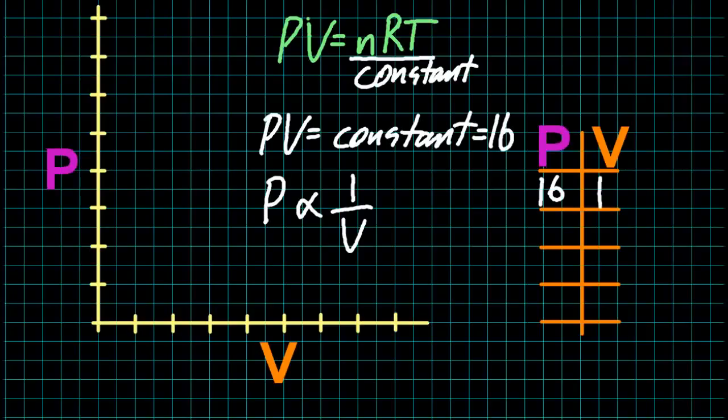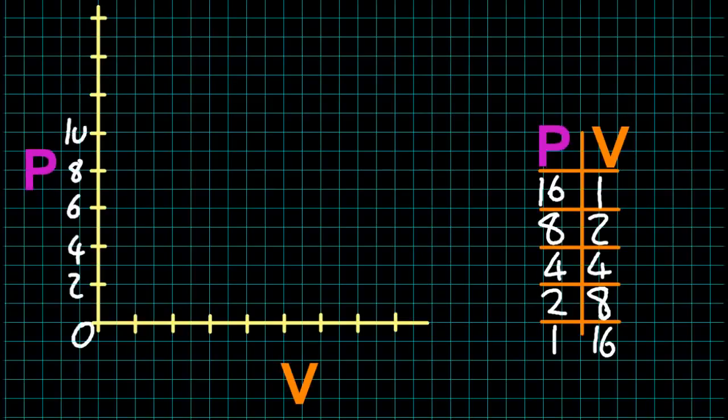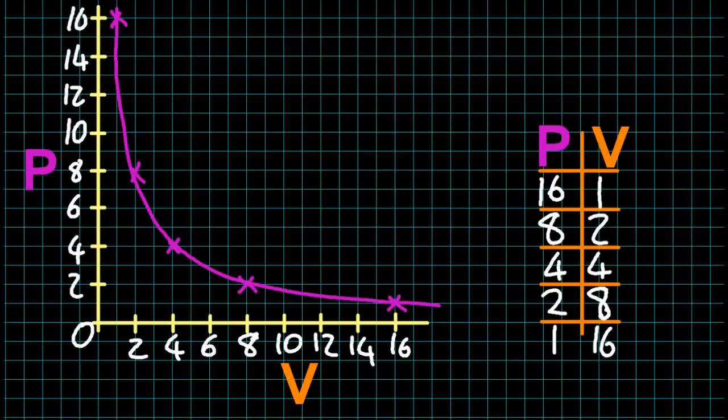Okay. So 16 times 1 is 16, 8 times 2 is 16, 4 times 4 is 16. Yes, PV is a constant. Plotting that data out gives me that curve line there.